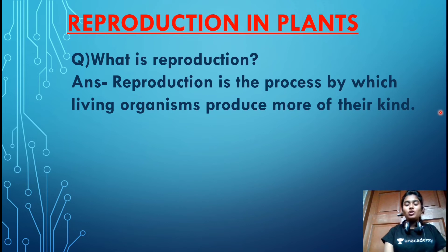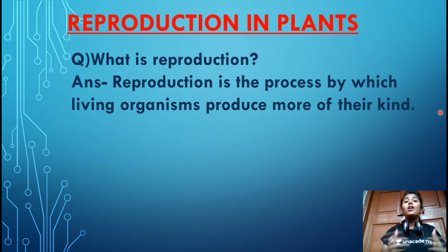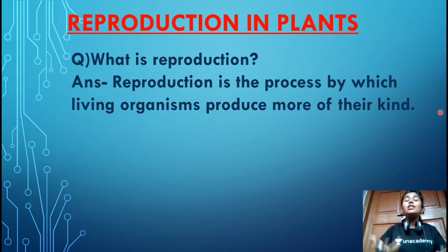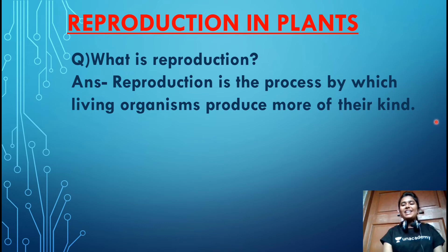What is reproduction? Reproduction is a biological process by which living organisms — for example, animals, plants, birds, and insects — each and every living organism present in the living world increases in number. That is, they produce their own kind, or in simple words, they give birth to their young ones. So reproduction is a process by which living organisms produce more of their kind.